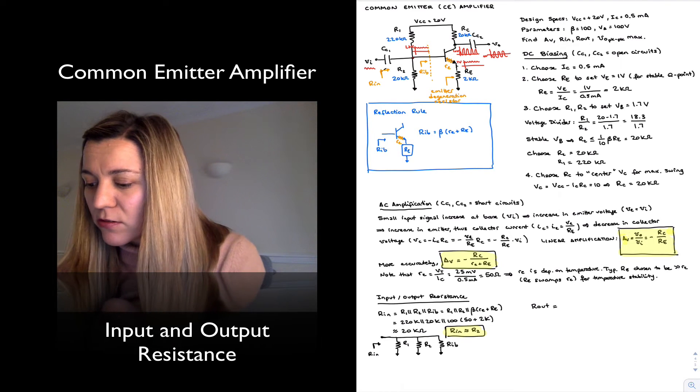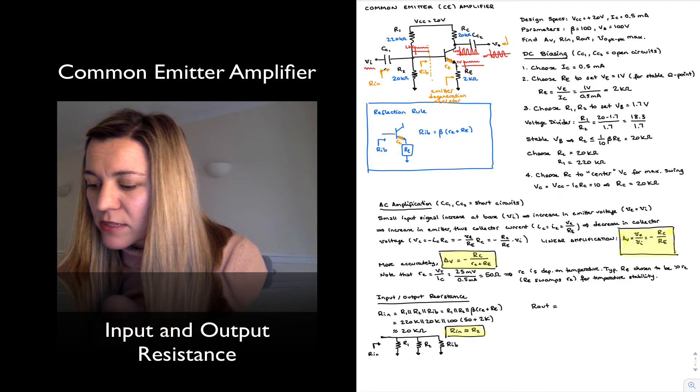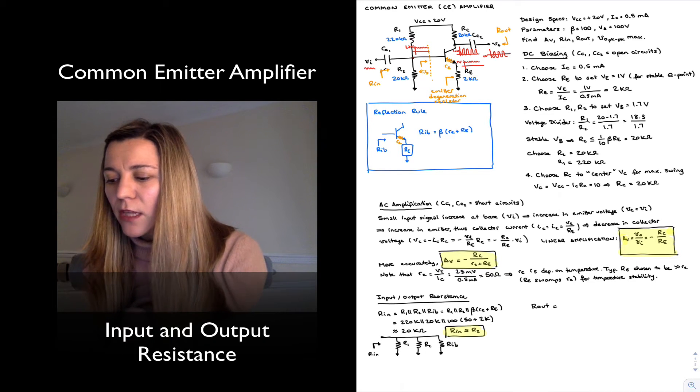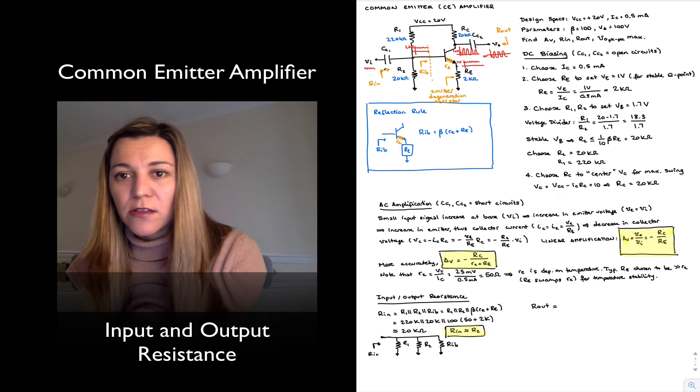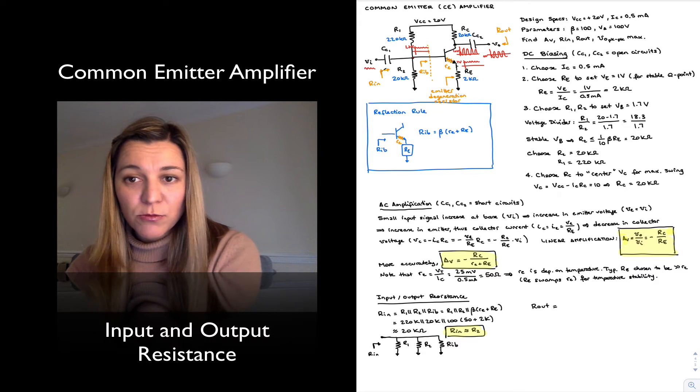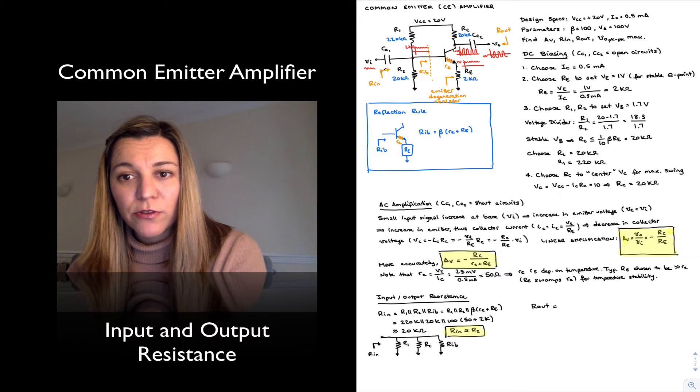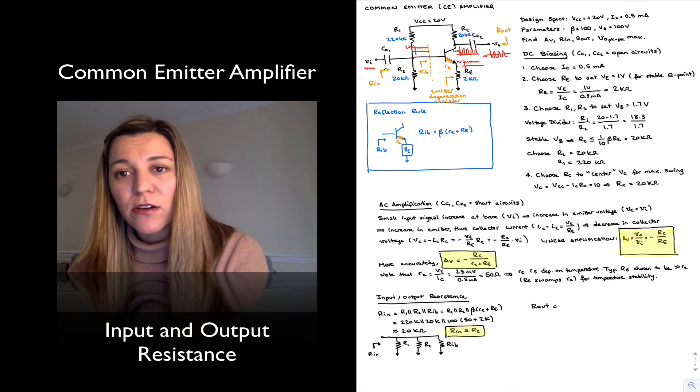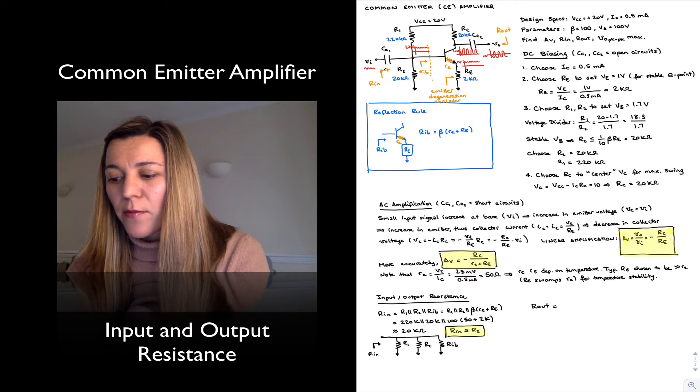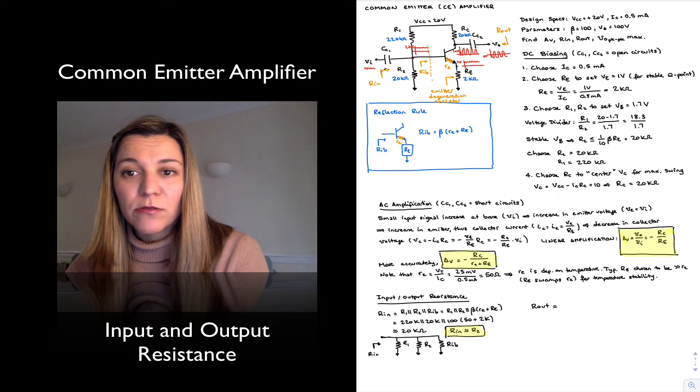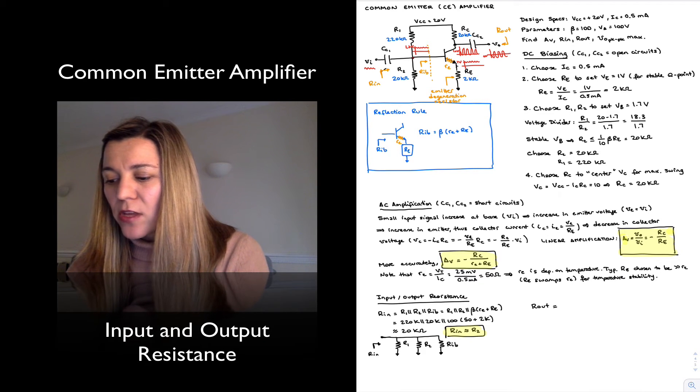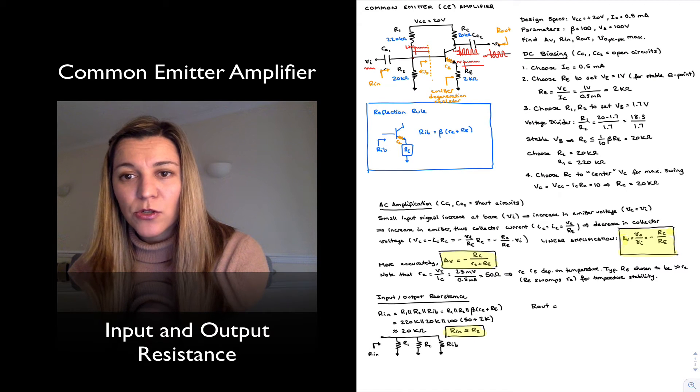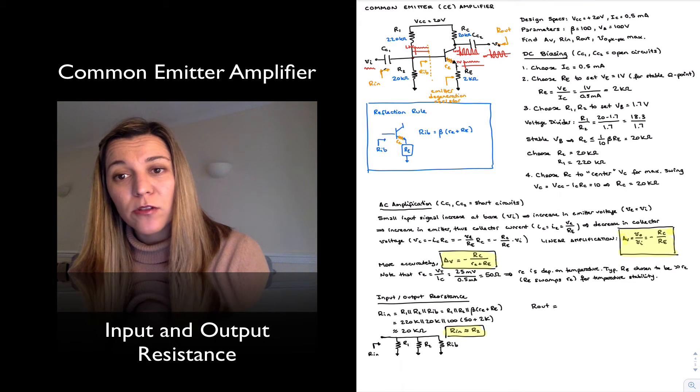So it will be the resistance looking in there, Rout. And again, I can see a CC2 capacitor, which I'm going to approximate as a short circuit for my AC equivalent circuit, and then I see RC connected to an AC ground because it's at DC source VCC. And then I'm looking into the collector of my transistor.